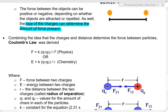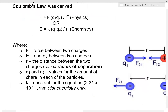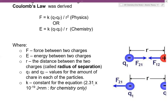Combining the ideas that charges and distance determine force, Coulomb's law was derived. There are two forms of the formula: one measuring force (physics) and one measuring energy (chemistry). F or E is the force or energy between two charges; R is the radius of separation; Q1 and Q2 are the charge values of each particle; and K is the constant — 2.31 × 10⁻¹⁹ joules per nanometer for chemistry.